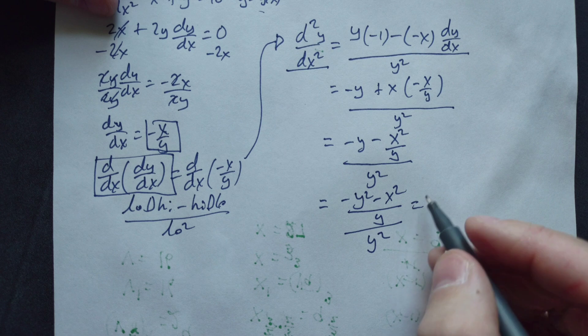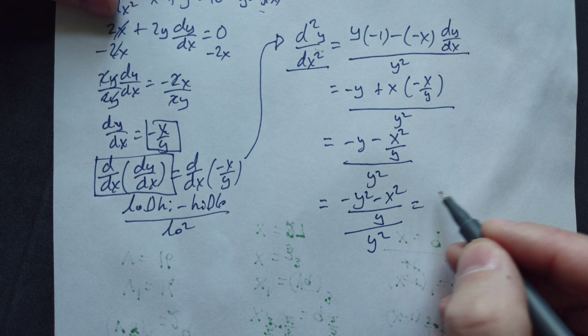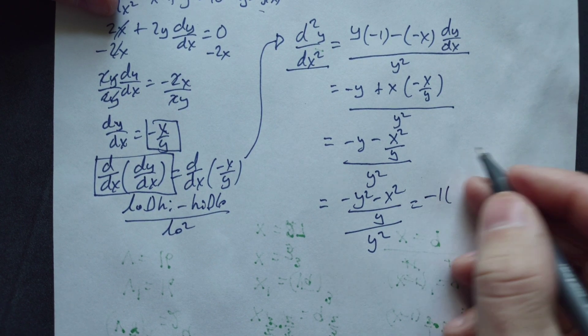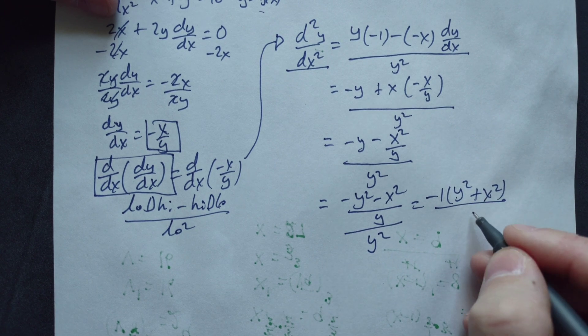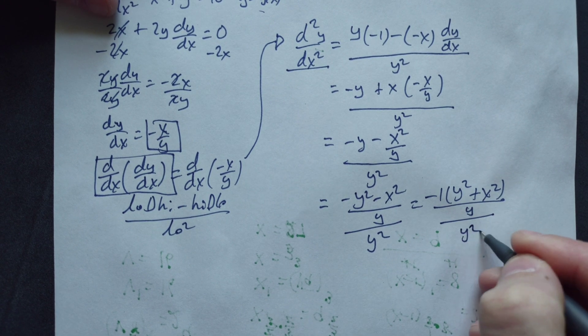Continue. Factor a negative one from the two top terms. It's going to be negative one, and then you have y squared plus x squared over y divided by y squared.